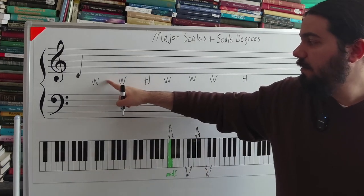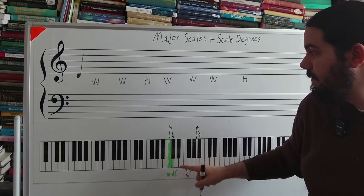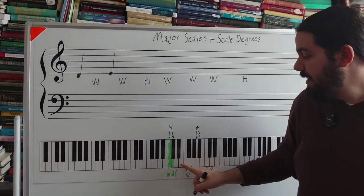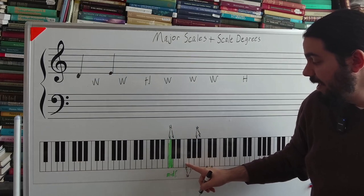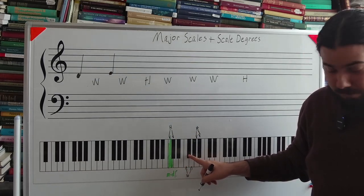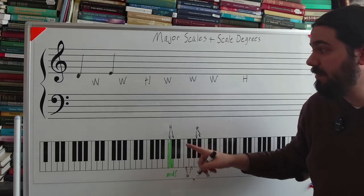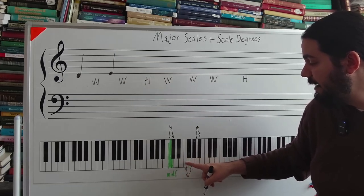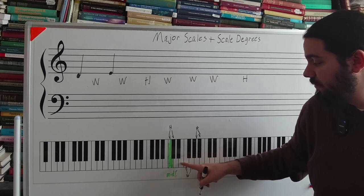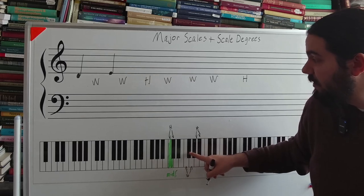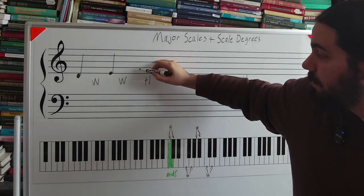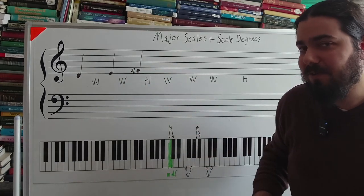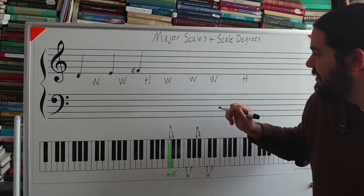Again, whole step up from D would be E. A whole step up from E would be not F, but F sharp. Again, because you go two half steps with one whole step. So you go from E to F, that's one half step. F to F sharp, that's another half step. So from E to F sharp, that is a whole step. To denote an F sharp, you simply put an F and then a hashtag in front of it.